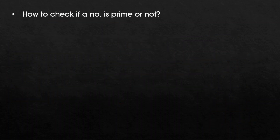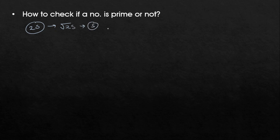Now let's talk about how to check whether a number is prime. One method we learned in school: take the square root of the number. For example, to check if 25 is prime, take √25 = 5, then check divisibility by all primes up to 5 — that is 2, 3, and 5. Since 25 is divisible by 5, it is not prime.